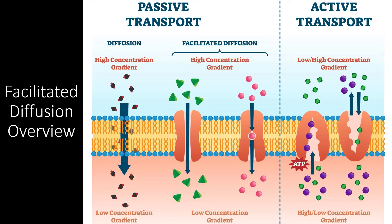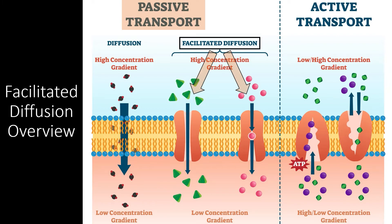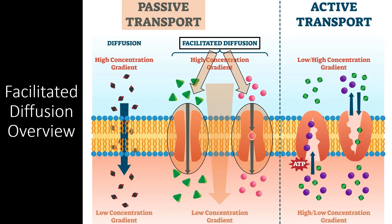Let's do a quick review of facilitated diffusion, a topic we first addressed in Unit 2.6. Facilitated diffusion is a type of passive transport, like normal diffusion, except that it happens through special protein channels and carrier proteins. These integral membrane proteins are necessary because charged particles and large polar molecules cannot easily make their way through the plasma membrane. However, facilitated diffusion is still a form of passive transport because the molecules are moving from an area of high concentration to an area of low concentration.